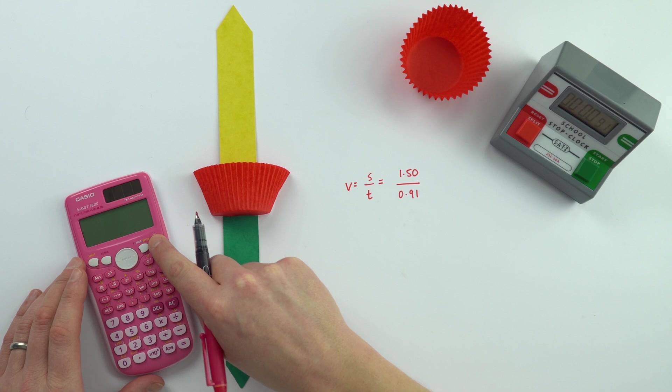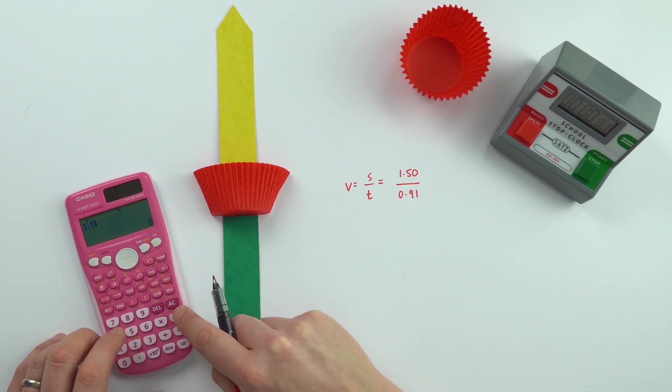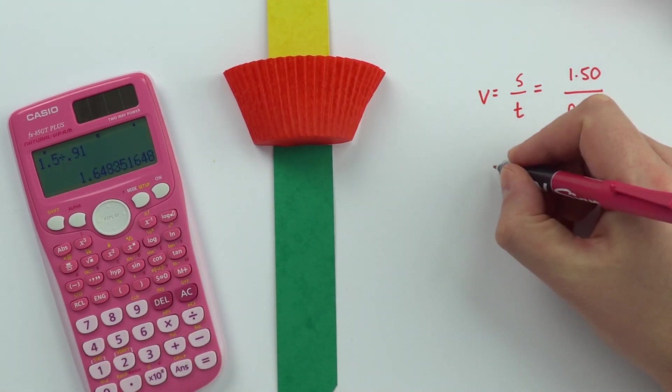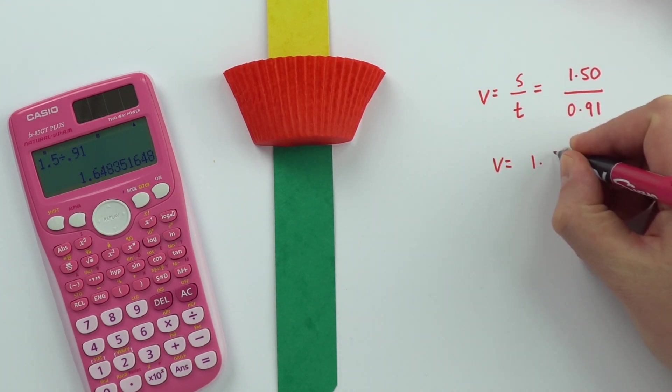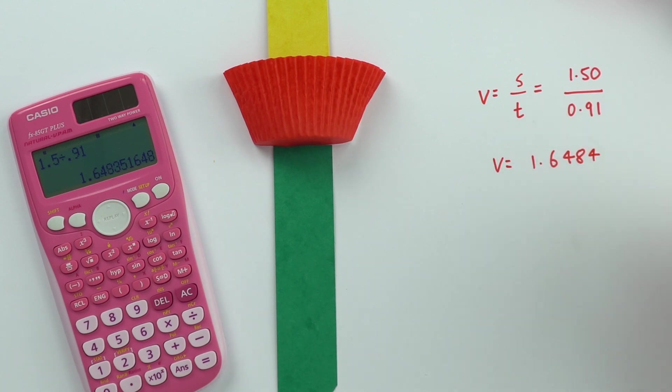Putting the numbers into my calculator, we've got 1.5 divided by 0.91. This gives me a value equal to 1.6484.